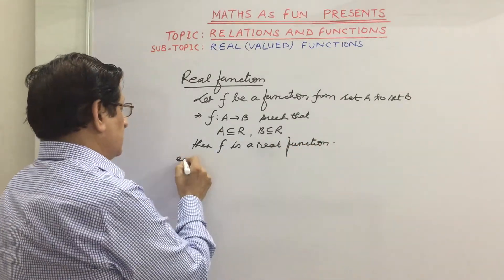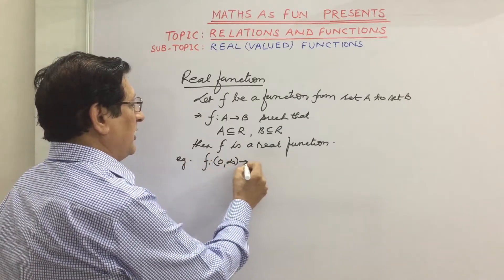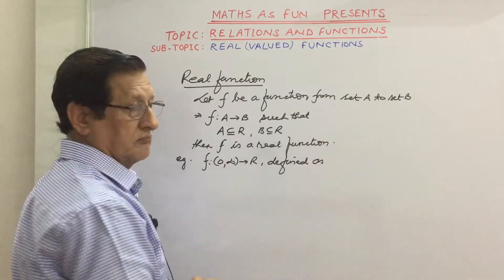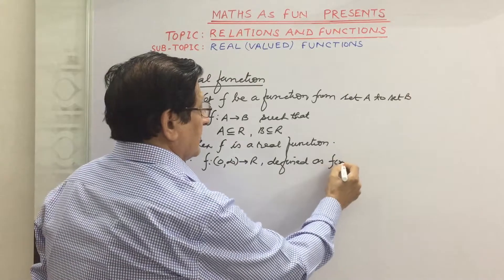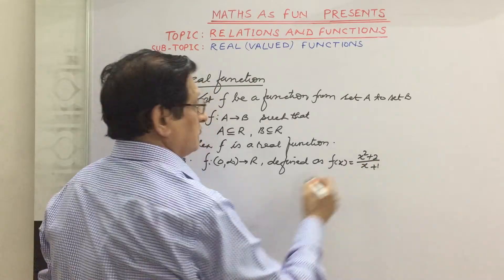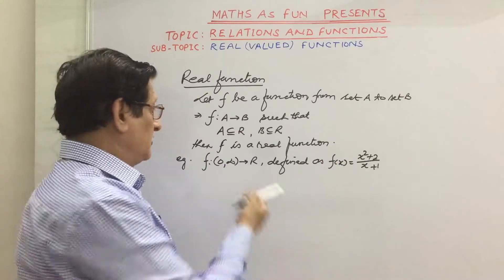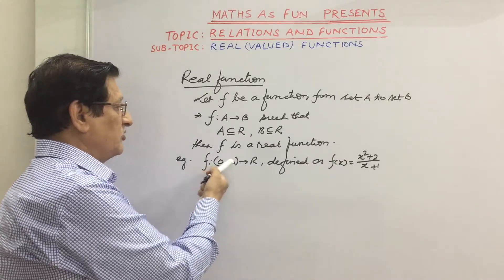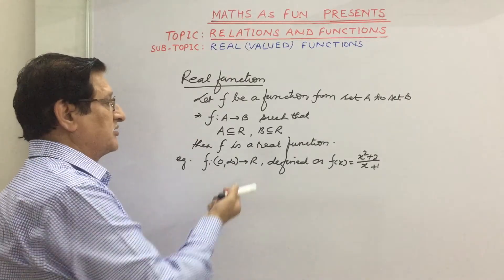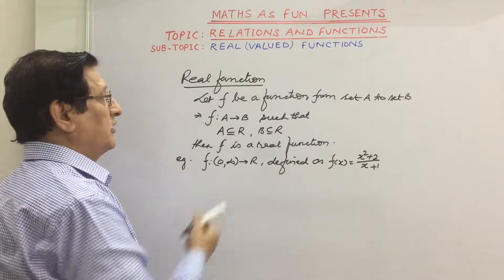For example, suppose you have been given a function f from 0 to infinity to R, defined as f(x) = (x² + 2) / (x + 1). It is a real function because the domain is 0 to infinity, which is a subset of the real numbers, and R itself is the set of real numbers.